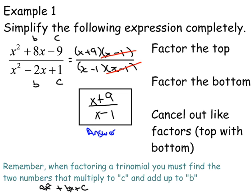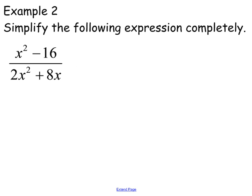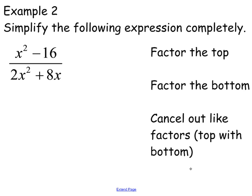Okay, let's try another example. It says simplify the following expression completely. So again, it's essentially three steps. Factor the top, factor the bottom, cancel out like factors.